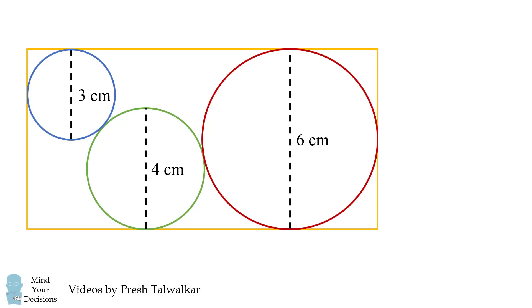Please email me any problems you see that are going viral on social media. You have a rectangle with three circles whose diameters are 3 centimeters, 4 centimeters, and 6 centimeters. The question is, what is the distance AB in the diagram?